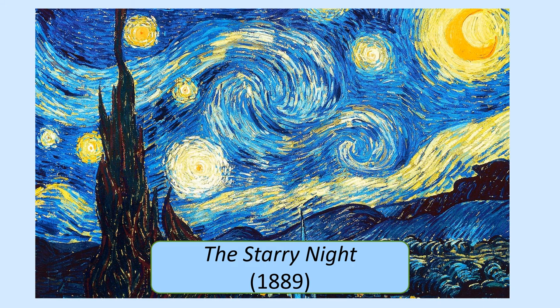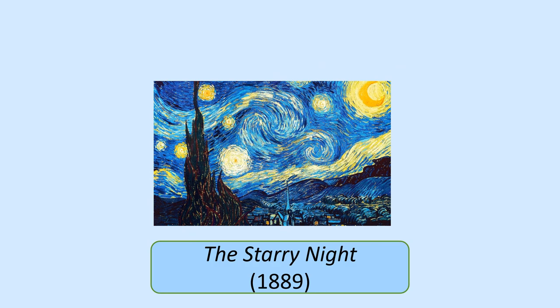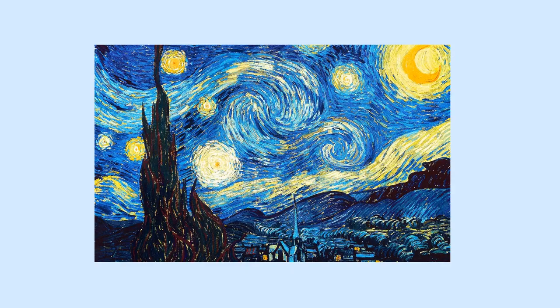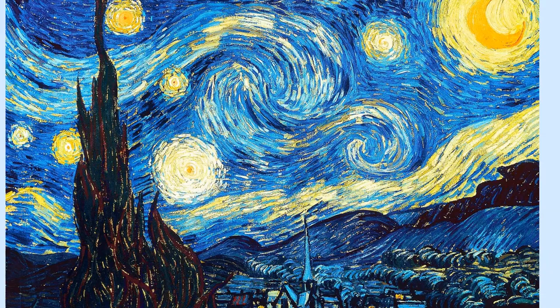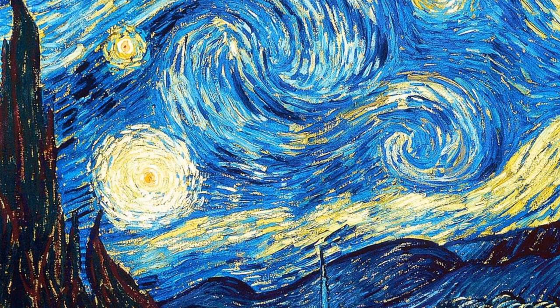The Starry Night is one of Van Gogh's most famous paintings. It is the only painting which shows the view from his hospital window at night time. The village below is imaginary, and the tall dark shadows in the foreground are cypress trees, which we have seen in his other paintings.